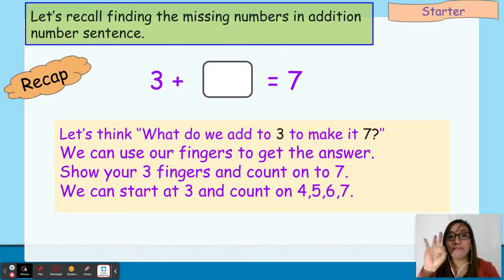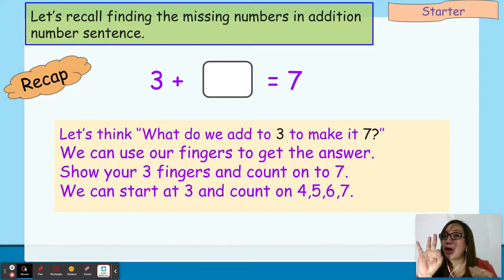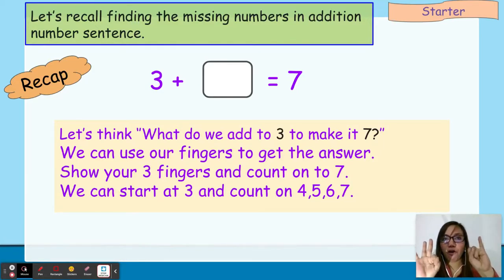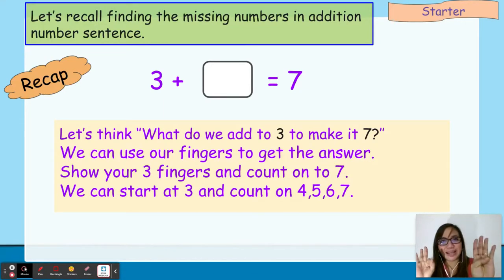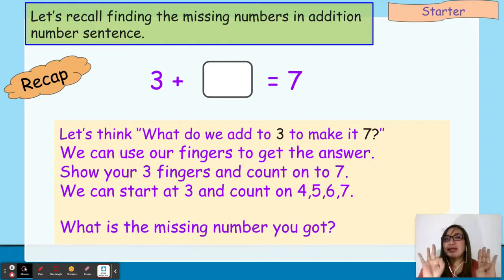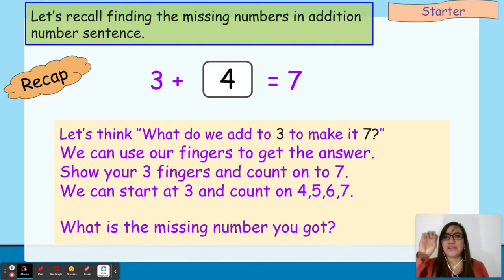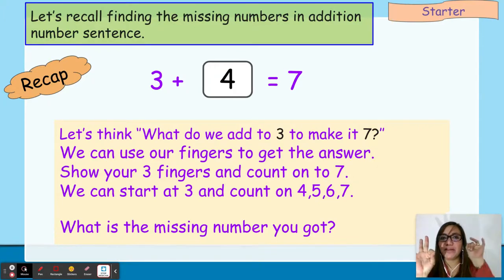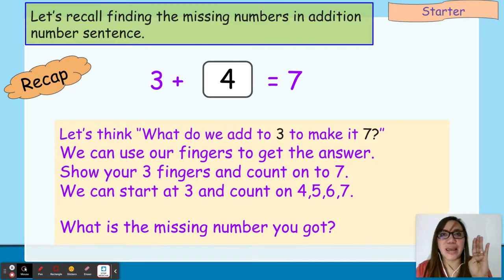Start with 3 and count on: 4, 5, 6, 7. So how many did we add to 3 to make it 7? The missing number is 4. We count on from 3 to 7 — 4, 5, 6, 7 — so the answer is 4.